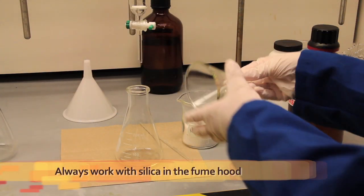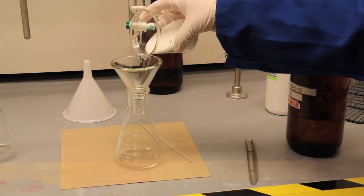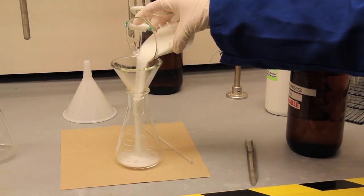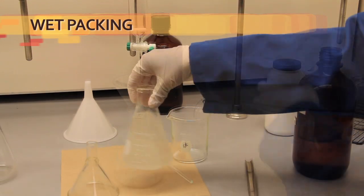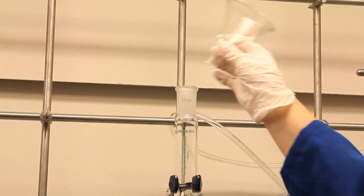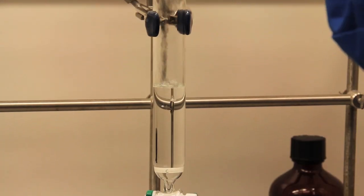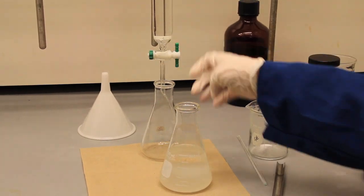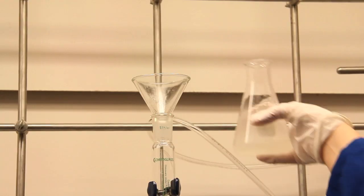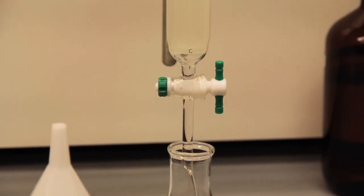I place the Erlenmeyer above a piece of paper in case some silica spills. That'll make cleanup easy. Once I have the correct volume of silica, I add enough solvent to make a slurry. The slurry shouldn't be too thick or it will trap air bubbles. Now we're ready to pack the column. The secret for good separation is even packing. I first fill the column with solvent and open the valve. Then I add the slurry through the funnel. This procedure allows the silica to set evenly.